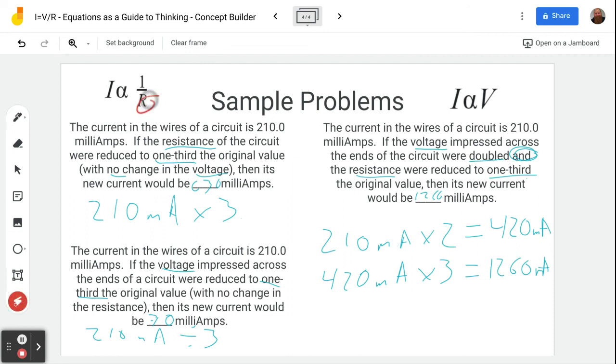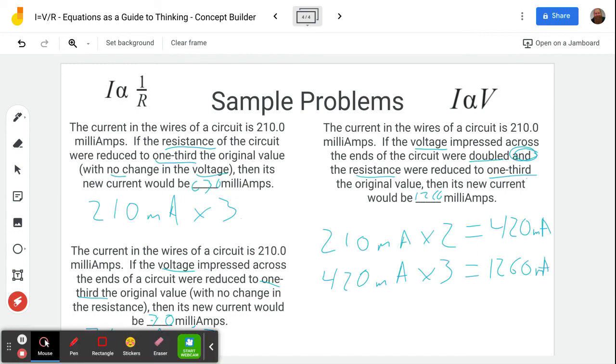So that's how you puzzle these through. Just look at whether you're dealing with resistance or voltage. Go back to the equation. Voltage is directly proportional. Resistance is inversely proportional to the current and figure out your new current. Enjoy puzzling these out on the Concept Builder. Don't forget to click that like and subscribe button. I've always wanted to say that. Thank you very much. I hope you enjoy puzzling through this on physicsclassroom.com.